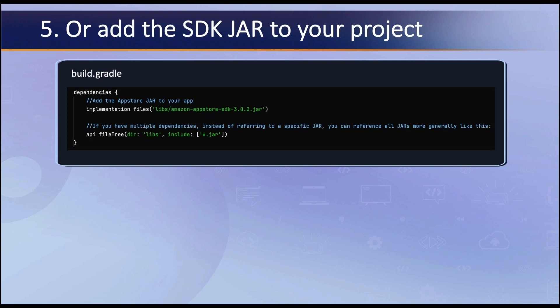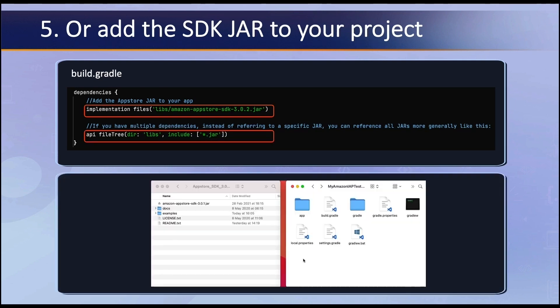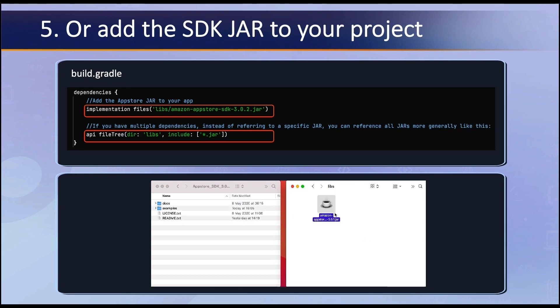Alternatively, you can add the SDK JAR directly into your project. To do this, open your app's Build Gradle file and add a dependency to the Amazon App Store SDK JAR, depending on the version you want to use. For example, if the JAR was version 3.0.2, the code would look like this. If you have multiple dependencies, instead of referring to a specific JAR, you can reference all JARs more generically like this. Then copy in the JAR file from the downloaded SDK into the libs folder within your app.